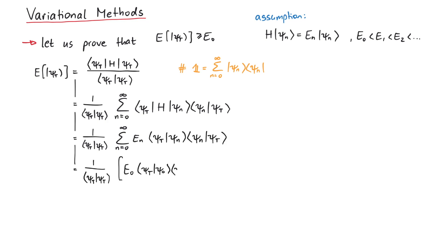Next we write out the sum over n starting from zero. In the second term, E1 is greater than E0, so we know that the second term must be greater than E0 times the two products of wave functions. And also in the third term, E2 is also greater than E0, and so on.